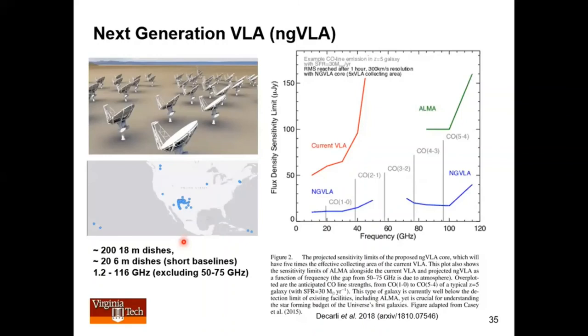So the current concept for the ngVLA is not 25, but 200 dishes, a little bit smaller, 18 meters as opposed to 25 meters for a number of good reasons, in addition to a whole bunch of smaller dishes, which are 6-meter in diameter, on short baselines. And now you know why you might want short baselines and not just very long baselines, because you want the diversity of baselines that lets you get the best image quality. So these 200 dishes are spread across the southwest over many states, not just New Mexico, but also into Texas. And I think they go into Mexico.